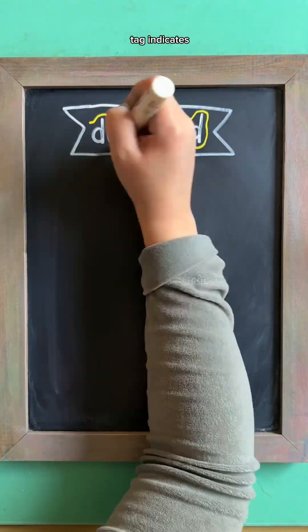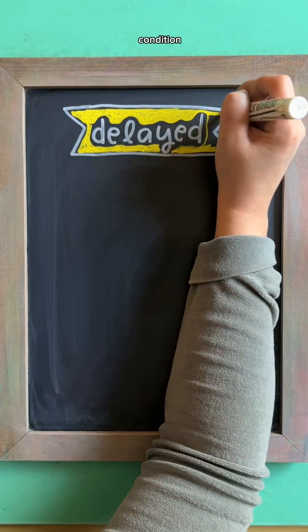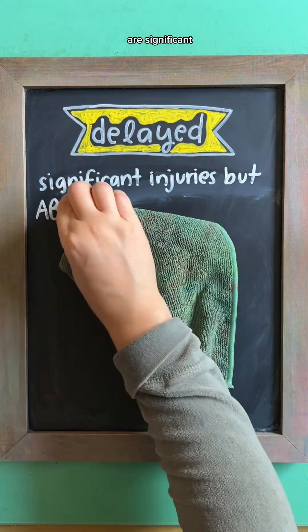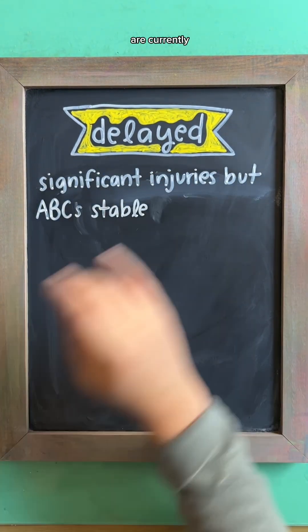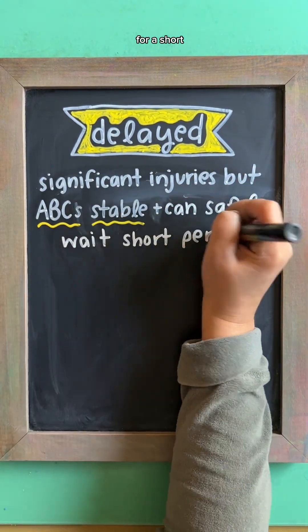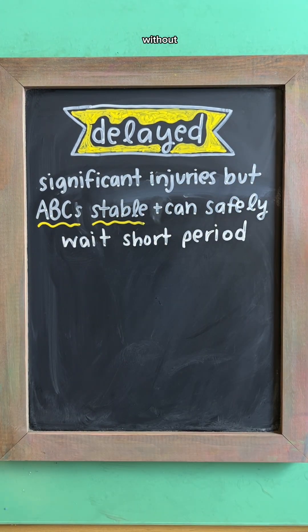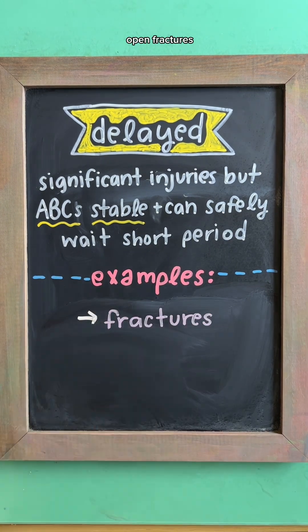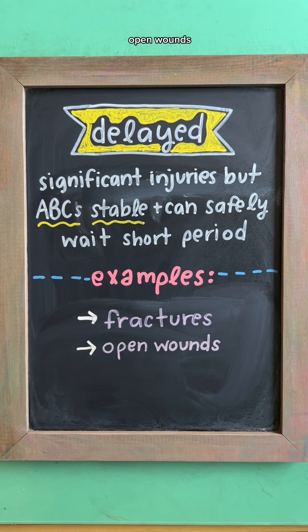A yellow tag indicates a delayed condition, meaning the injuries are significant, but ABCs are currently stable and treatment can be delayed for a short period of time without significant risk of mortality. Examples of this are open fractures and large open wounds.